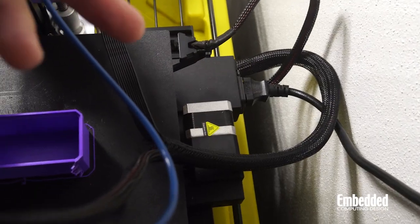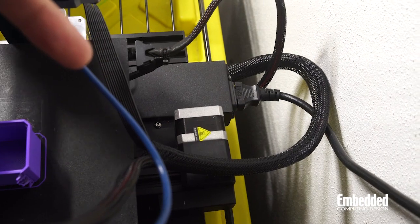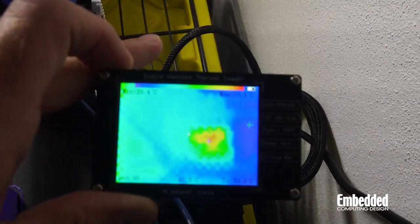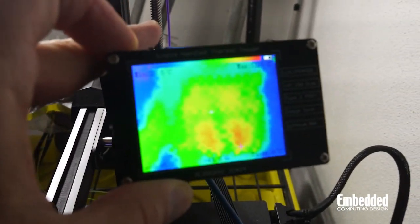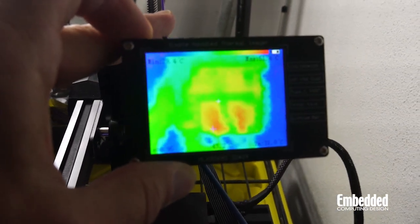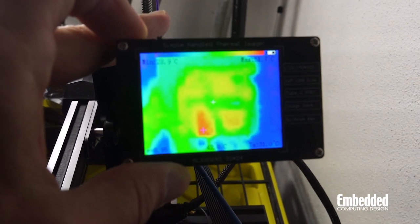So this stepper on my 3D printer right here, this is the y-axis stepper. It's measuring in at around almost 60 degrees Celsius without a heat sink on it. Now this one over here is a bit cooler at around 55, it's kind of varying some.